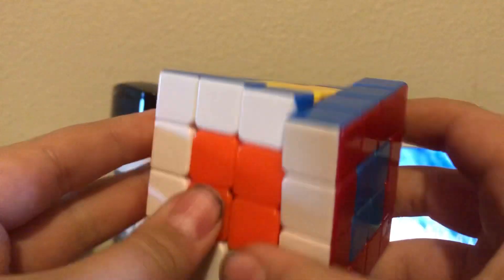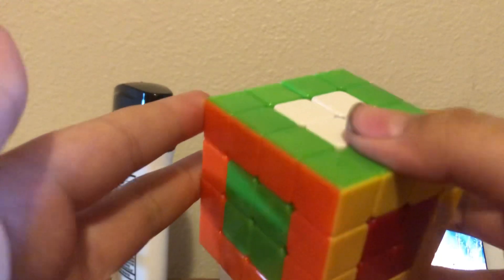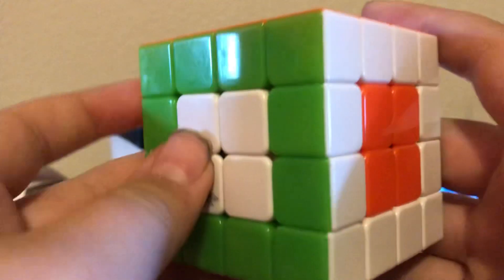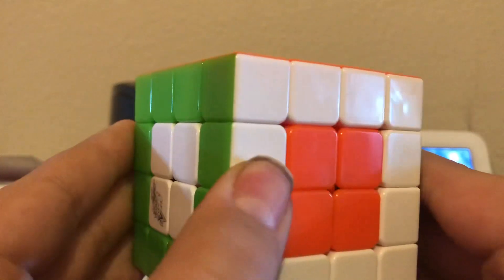And boom, you have now made the dot pattern on the 4x4 Rubik's cube. If you followed along this tutorial, you did a good job. If you got it wrong, you can start over.